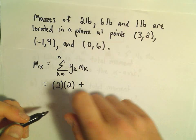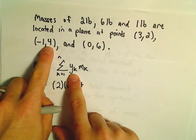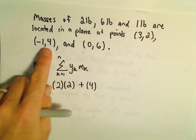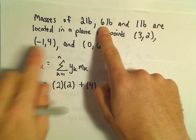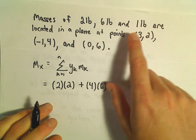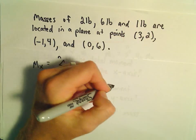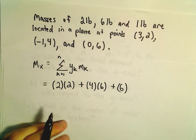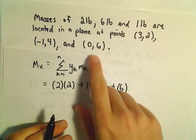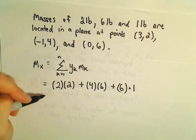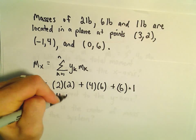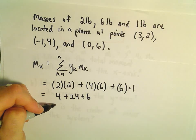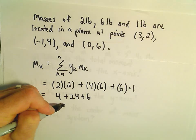And then we add to that, we go to the next point, we look at the next y-coordinate, which in this case is 4, and we multiply it by its mass, which is 6. And then we look at the last point, it has a y-coordinate of 6, and then we multiply it by its corresponding weight, which is 1 pound. So we've got 4 plus 24 plus 6, so we're left with the value 34.